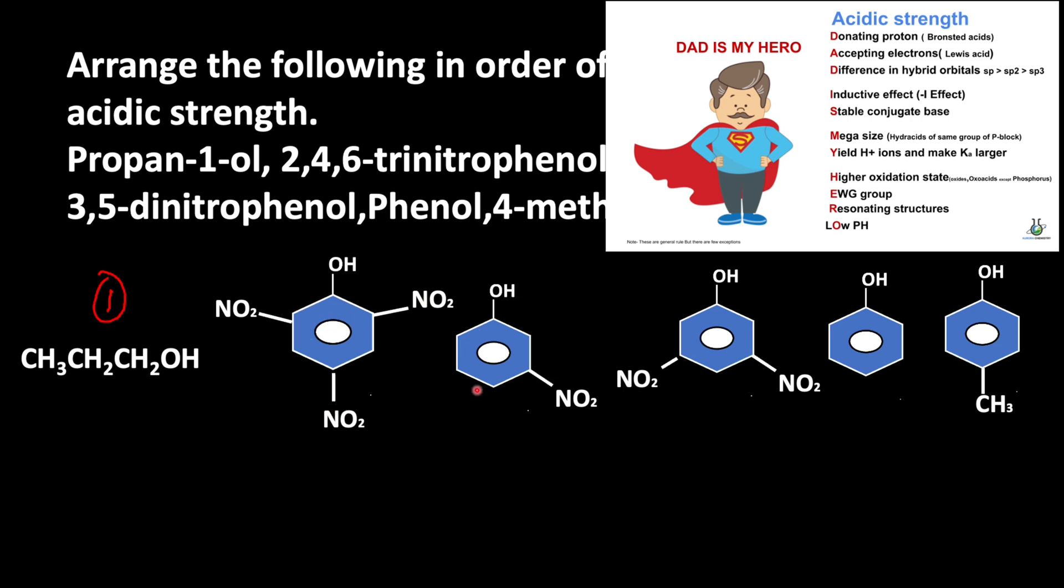Such a group is present in all other three compounds. So because of this CH3 group, the acidic strength of the phenol decreases. Next to propanol, we can write the acidic strength for 4-methylphenol.